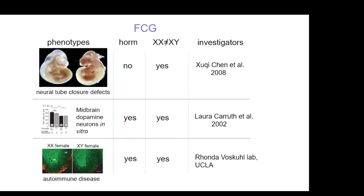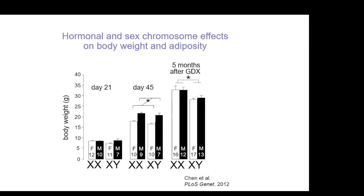By now, we, our collaborators, and other groups have used this model to look at a wide variety of physiological outcomes and disease phenotypes. For example, Rhonda Voskuhl's lab at UCLA studying autoimmune disease finds that, yes, there is a hormone effect — in multiple sclerosis, women get MS more than men, and in the mouse model, female mice get the disease more than males. Giving female mice testosterone protects them. But in addition, XX animals are worse than XY animals independent of whether they have testes or ovaries. So you have a combination of hormonal and sex chromosome effects.